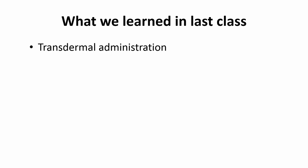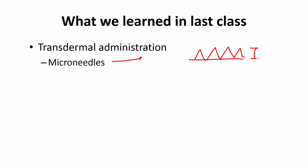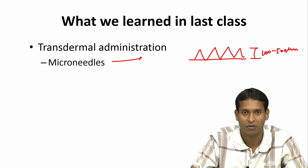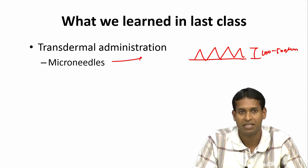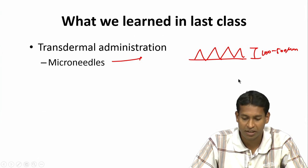In the last class we finished our discussion on transdermal administration where we talked about microneedles, which are small structures from 100 to 500 microns big. When they penetrate the skin they only go deep enough to bypass the stratum corneum, but do not touch the nerves and blood cells, which is what would cause pain. They are actually very effective in terms of enhancing permeation. That is one bioengineering approach.